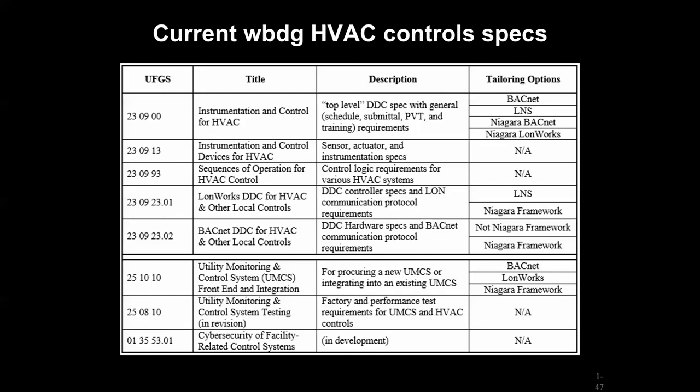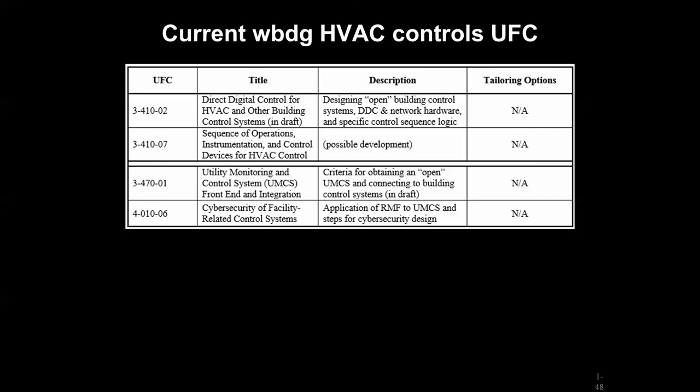On the whole building design guide, there are different control specifications and criteria to help deliver open systems for retrofit or new building opportunities. On the specification side, we have Division 23 and 25, with different documents broken into different functions of our control system — a general spec, a separate spec for sensors and actuators, one for sequence of operations, and a separate specification for protocol-specific devices. Similarly, Division 25 for the UMCS has one for implementing UMCS, one for testing, and a separate one for cyber security. Design criteria are also available on the whole building design guide.